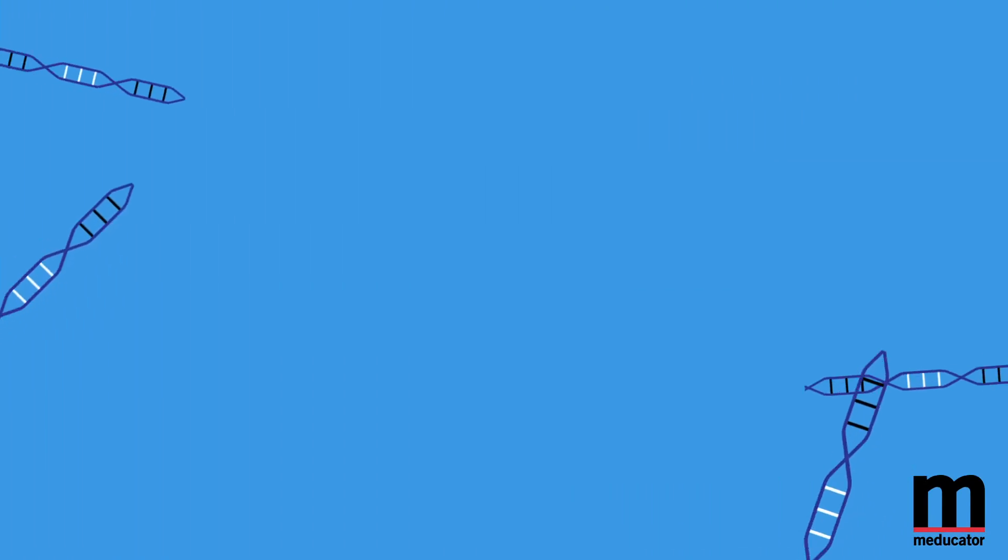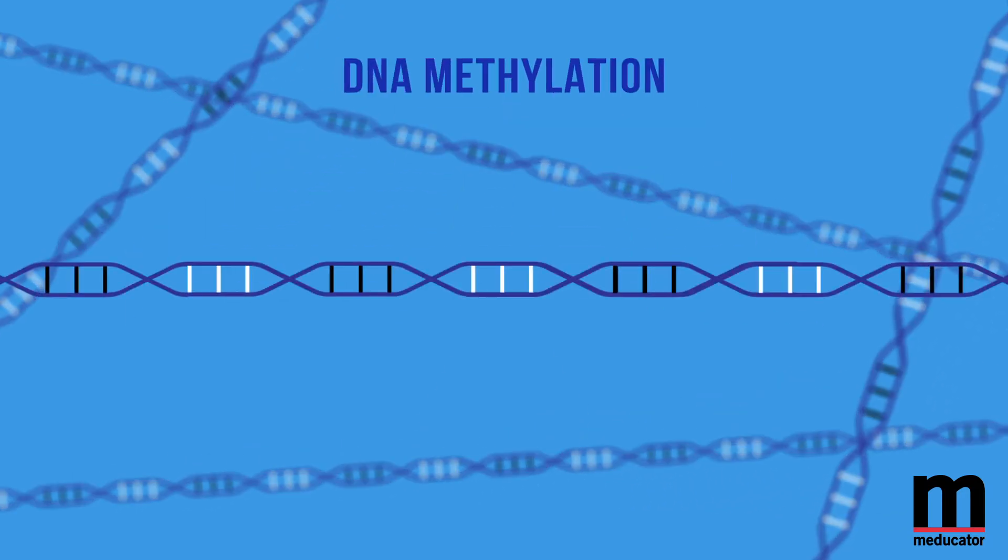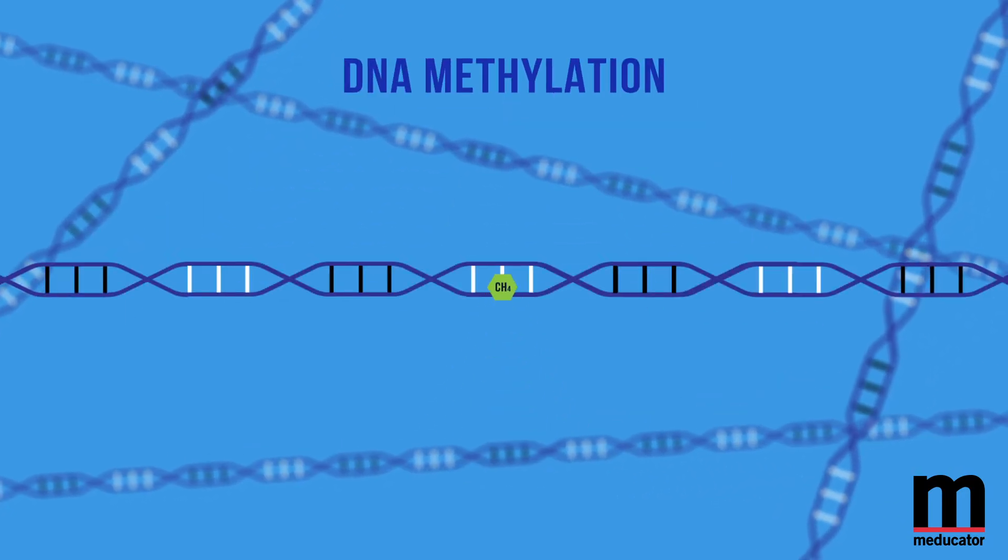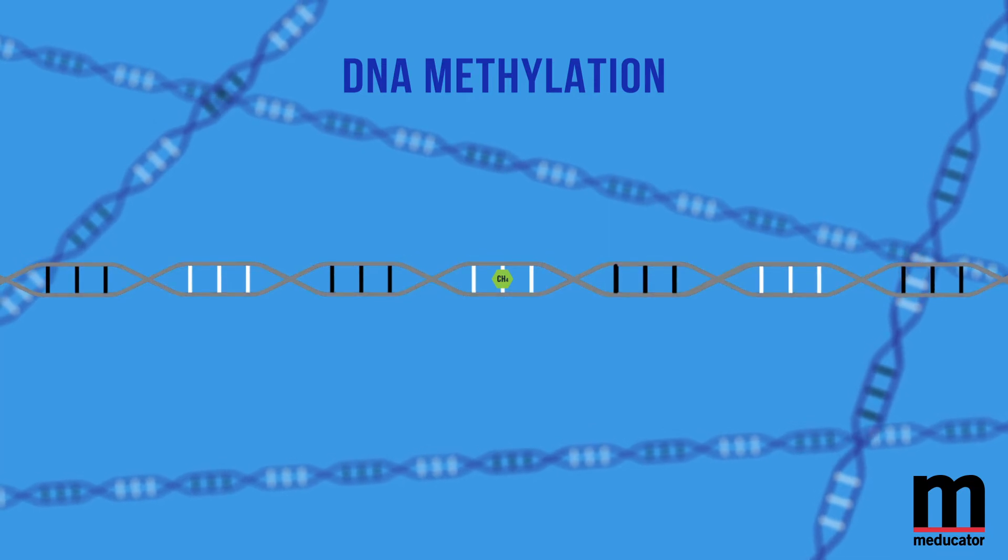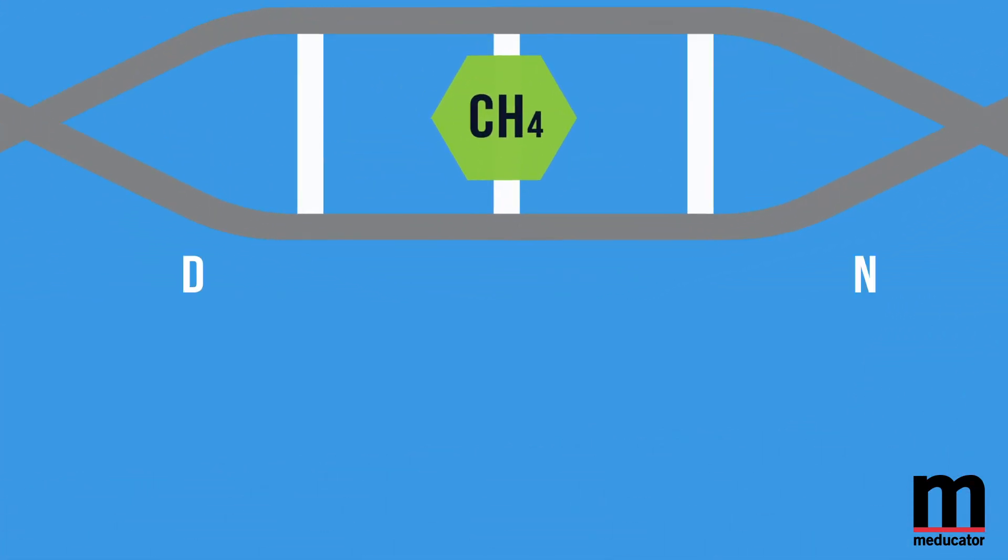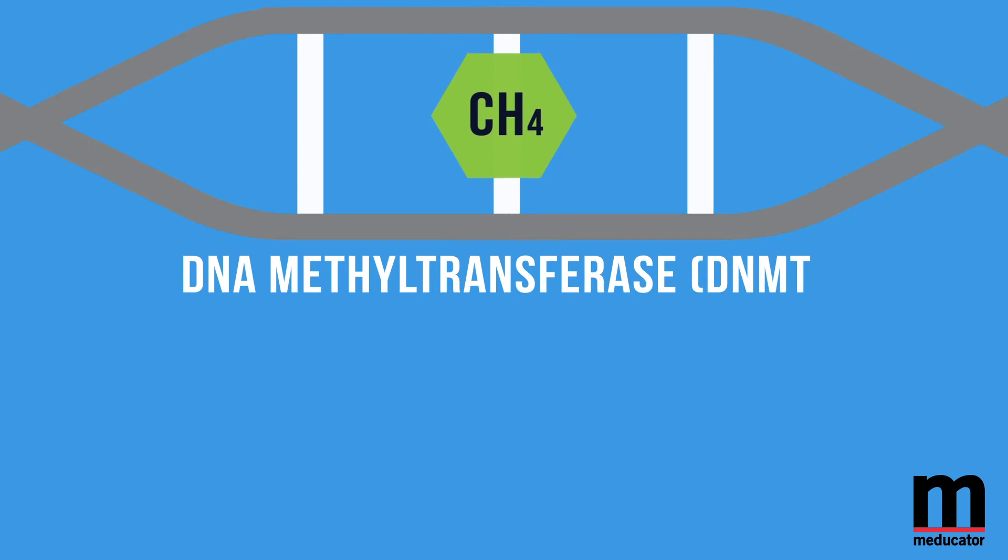The third mechanism is DNA methylation, which is the process of adding a methyl group to DNA to stop the transcription of particular genes. This is carried out by DNA methyltransferases, or DNMTs, which are enzymes that come in two flavors, de novo DNMTs and maintenance DNMTs.